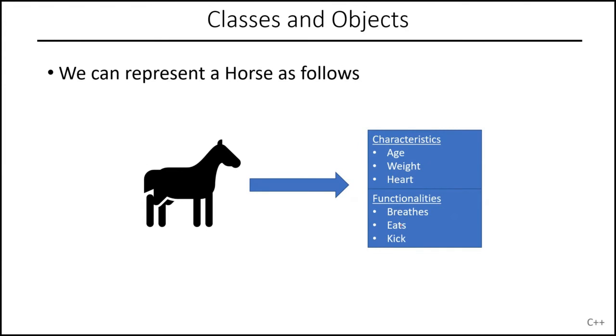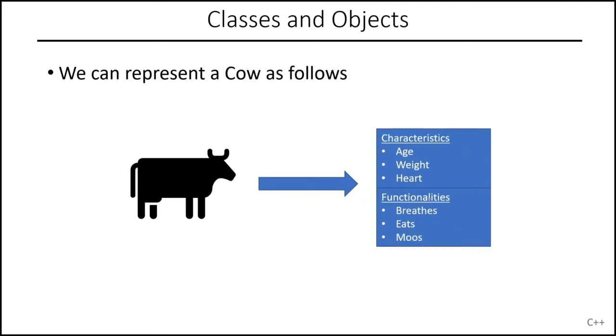Okay, let's do another one. Here's a horse. The horse also has an age, has a weight, has a heart. It can breathe, it can eat, and it's also able to throw kicks.